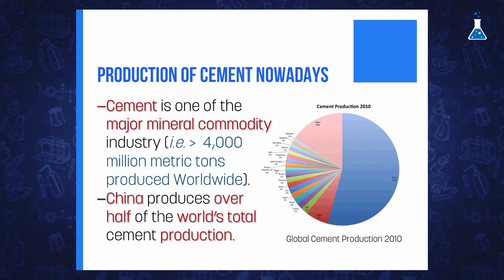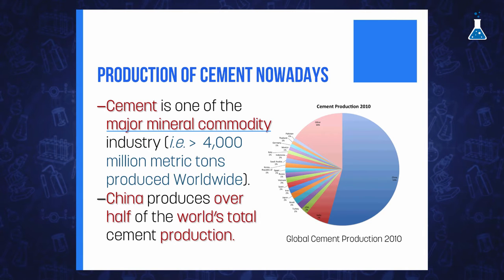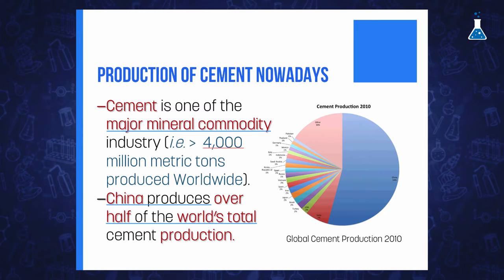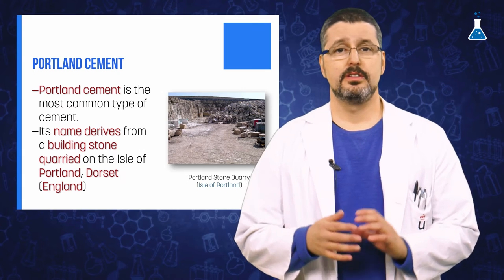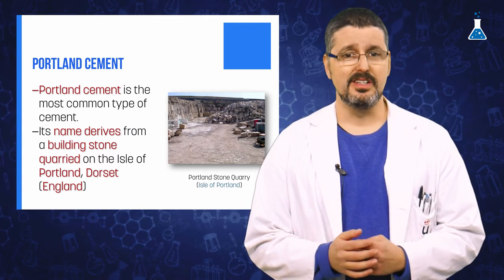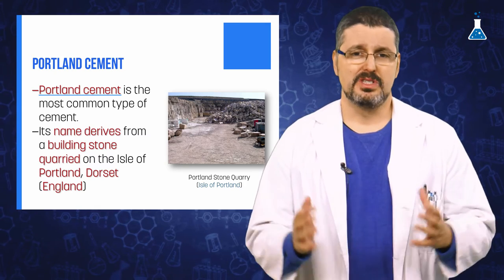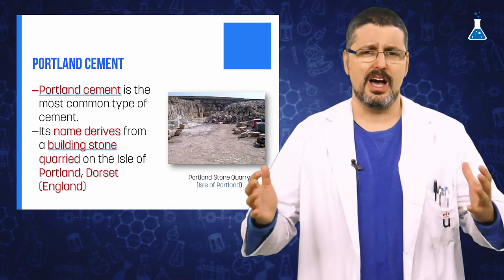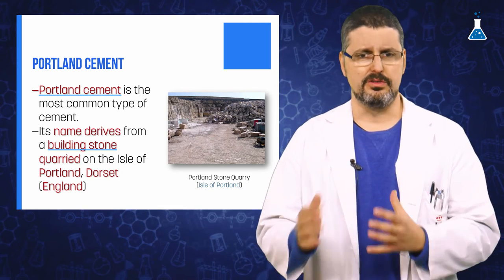Today, the production of cement is one of the major mineral commodity industries, with above 4,000 million metric tons produced worldwide, where China produces over half of the world's total cement production. The most common type of cement is Portland cement, whose name derives from a building stone quarried on the Isle of Portland in Dorset, England.